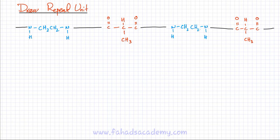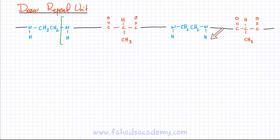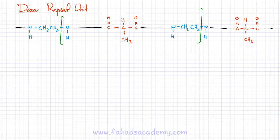Now I'm going to try and draw the repeat unit. I'm going to start at any point — let's start over here. This is the point where my repeat unit is starting. I'm going to follow the polyamide chain and see where it starts to repeat back again. If you look carefully, this repeat unit appears after this point, after which it starts to reappear again. So I'm going to stop at this point.